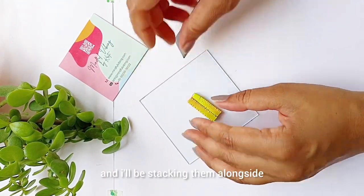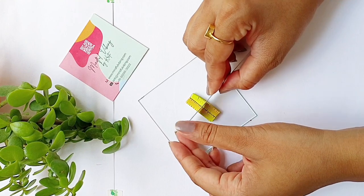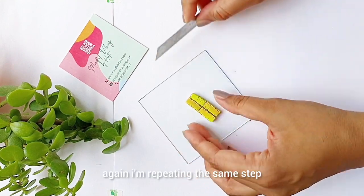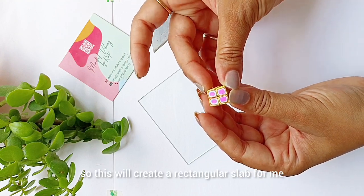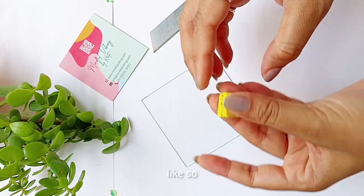And I'll be stacking them alongside. Again I'm repeating the same step. So this will create a rectangular slab for me like so.